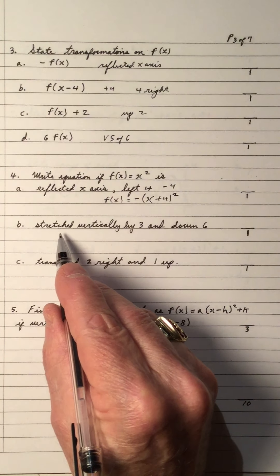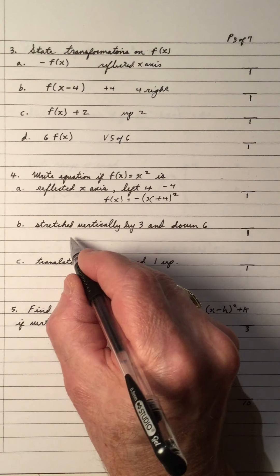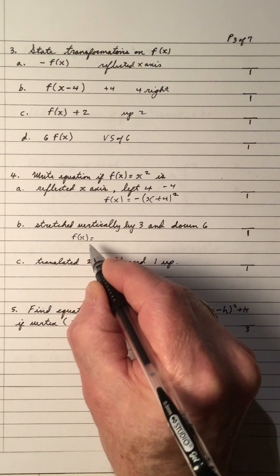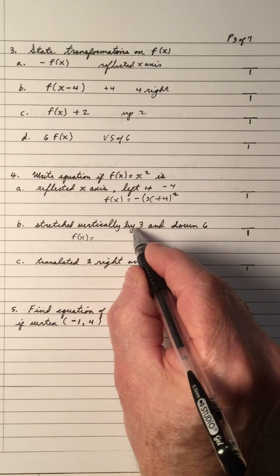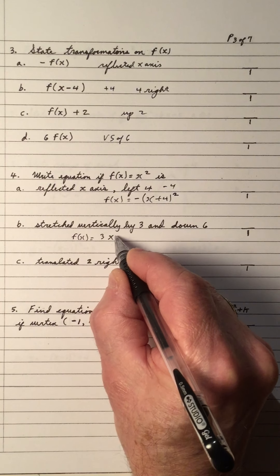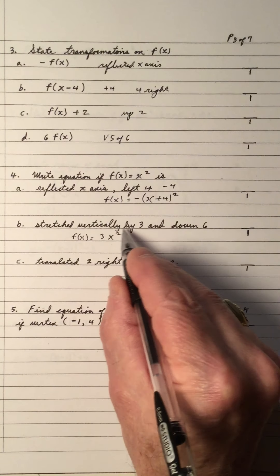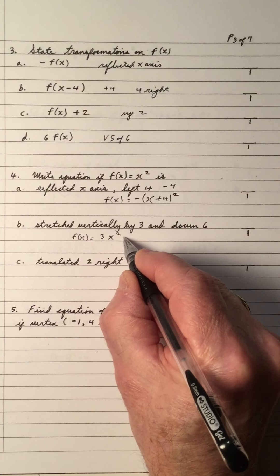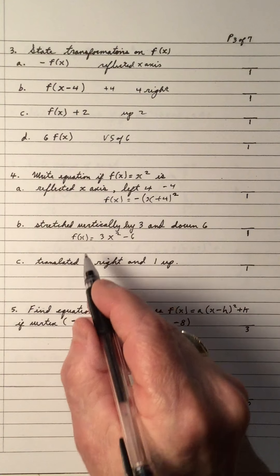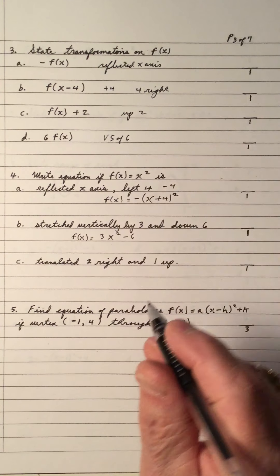A vertical stretch by 3 and down 6: f(x) equals 3x squared minus 6. Stretched vertically by 3 means multiply x squared by 3; down 6 means subtract 6. There's no horizontal shift. The equation is in terms of f(x), not y, because we're using function notation.